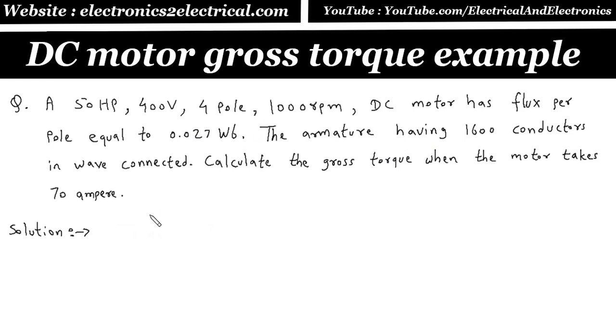P is equal to number of poles is 4. N is equal to 1000 rpm.